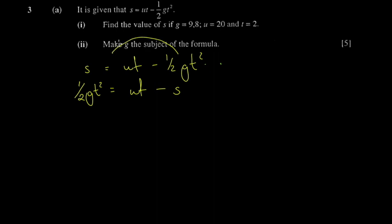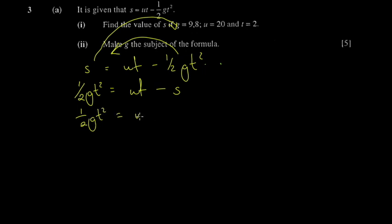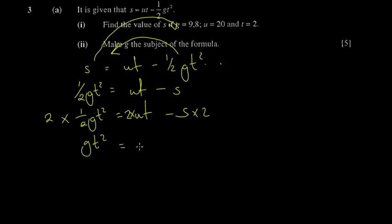So we accomplished two steps in one step. We get half g t squared equals ut minus s. Now you want g, so to get rid of the half you multiply by 2 — that's how you get rid of the fraction, you multiply by the reciprocal. Everything in every term gets multiplied by 2. So you get g t squared equals 2ut minus 2s.